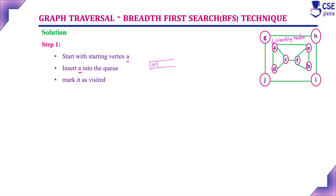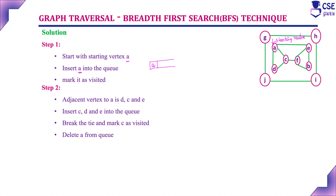The data structure we are using in breadth first search traversal is the queue data structure. In depth first search traversal, we use stack data structure. Here, we are considering starting vertex A, inserting it into the queue and marking it as visited. So now we have visited vertex A. Next step, consider the adjacent vertices to A. The adjacent vertices to A are D, C, and E — all three vertices are adjacent to A.